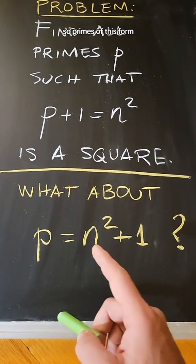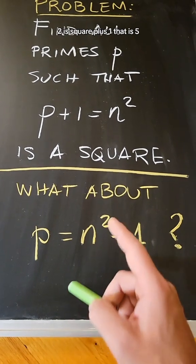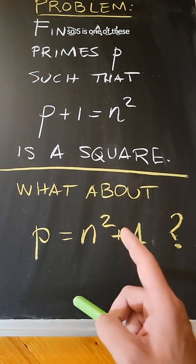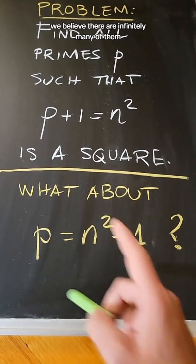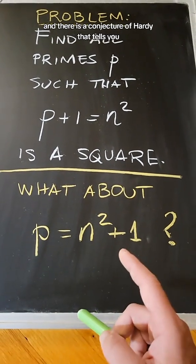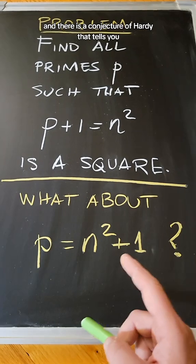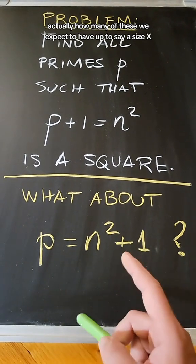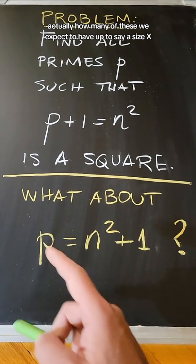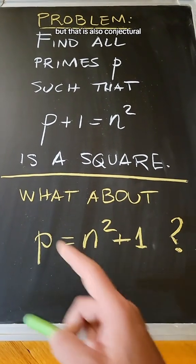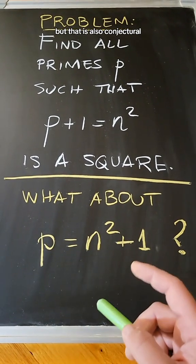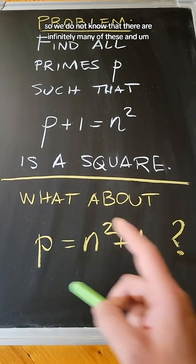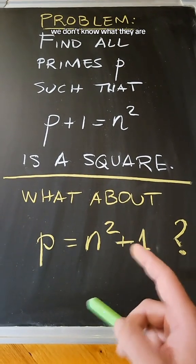Primes of this form — for example, when n equals 2, n squared plus 1 is 5, so 5 is one of these. We believe there are infinitely many of them, and there is a conjecture of Hardy that tells you how many of these we expect to have up to a size x. But that is also conjectural. So we do not know that there are infinitely many of these, and we don't know what they all are.